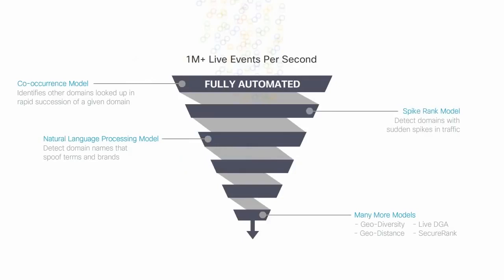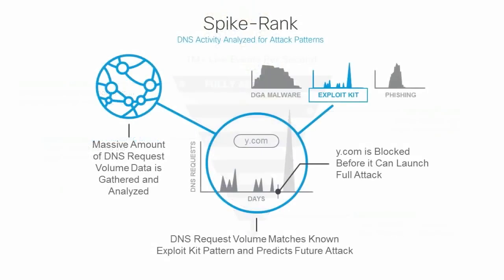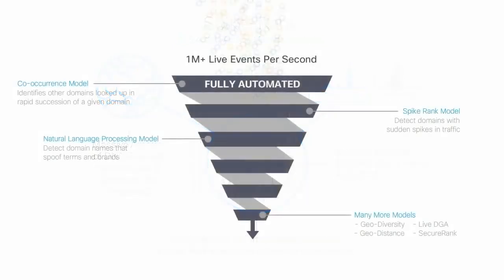The SpikeRank model recognizes when spikes in traffic to a domain match patterns seen with other attacks. For example, the traffic to one domain matches the request pattern seen with exploit kits, so we'll block the domain before the full attack launches. The predictive IP space monitoring model starts with the domains identified by the SpikeRank model, and it scores the steps attackers take to set up infrastructure, like the hosting provider, name server, IP, etc., to predict if they're malicious. This identifies other destinations that can be proactively blocked before an attack launches.